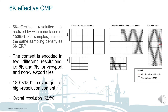The 6K effective CMP is realized by cube faces of 1536×1536 samples — almost the same sampling density as 6K ERP. The content is encoded in two different resolutions: 6K for viewport and 3K for non-viewport tiles. This results in 180×180 degree coverage for high-resolution content, and the packing overall has 62.5% of the original resolution.